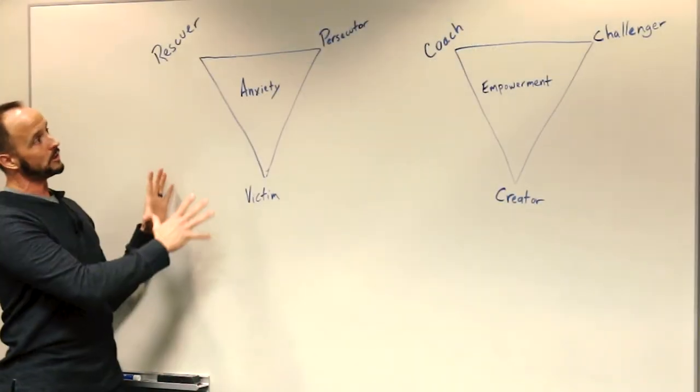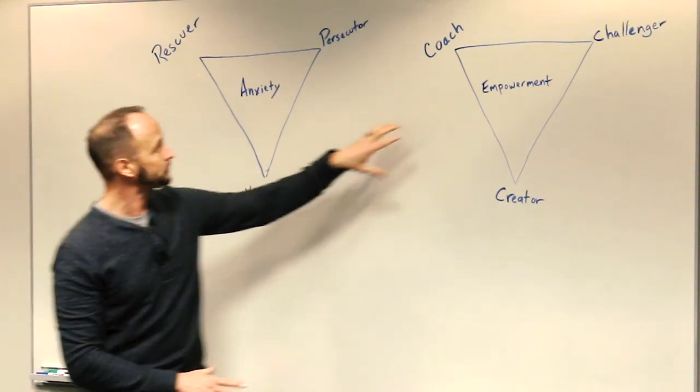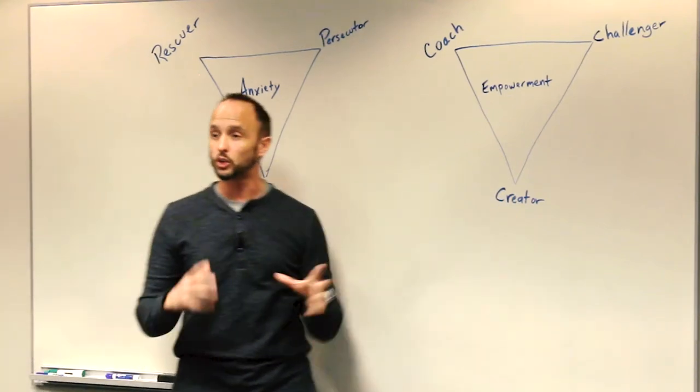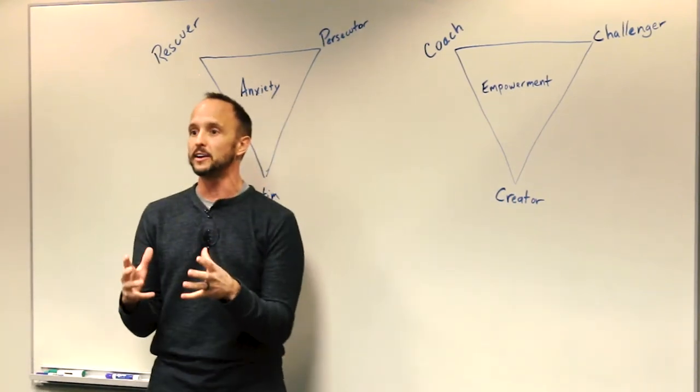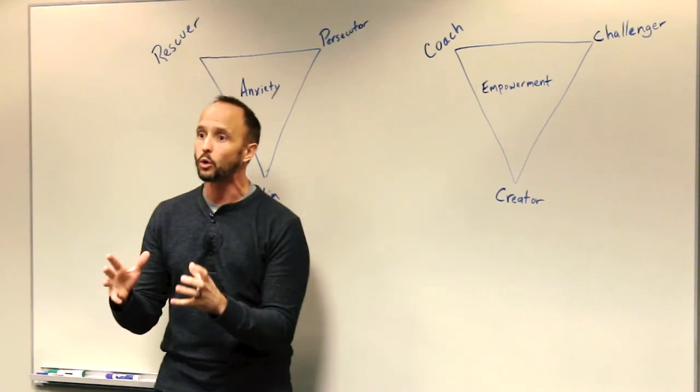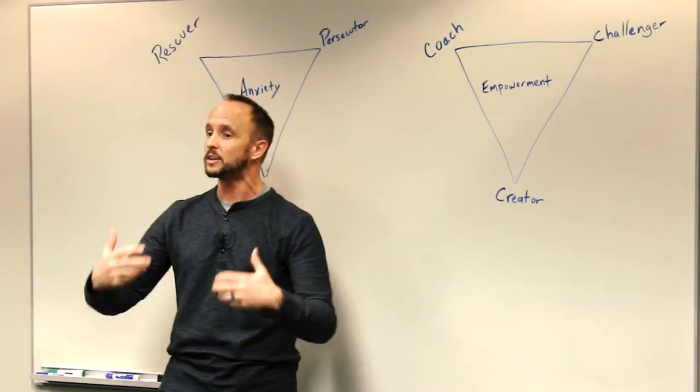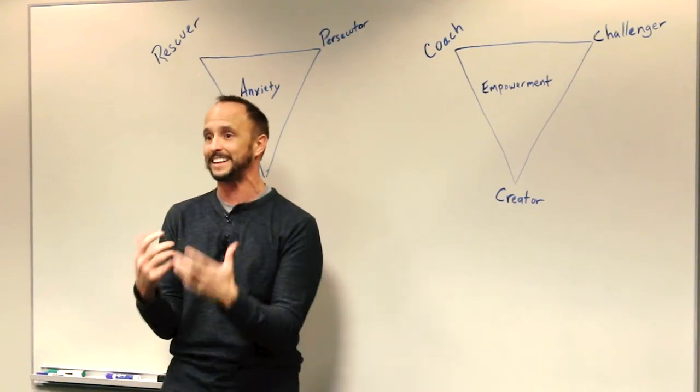Now, a way out of this is to move towards the Empowerment Triangle. In the Empowerment Triangle, the victim becomes a creator, and what we mean by a creator is somebody who is outcomes-oriented, who's creative and solution-focused, who's a problem solver, who can take responsibility for themselves and engage.